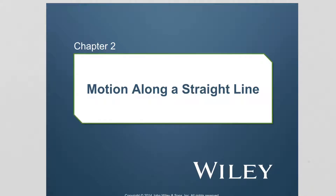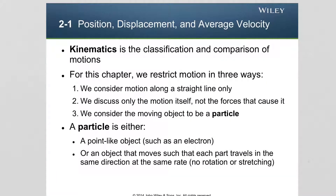In this lecture, I will discuss the concepts associated with motion along a straight line. In this chapter, as well as in chapter 4, I'm going to discuss the branch of physics known as kinematics. Kinematics is the classification and comparison of motions of objects. For this specific chapter, we're going to restrict motion in three ways: we will consider motion along a straight line only, we discuss only the motion itself and will not be interested in the forces that cause the motion, and we consider the moving object to be a particle.